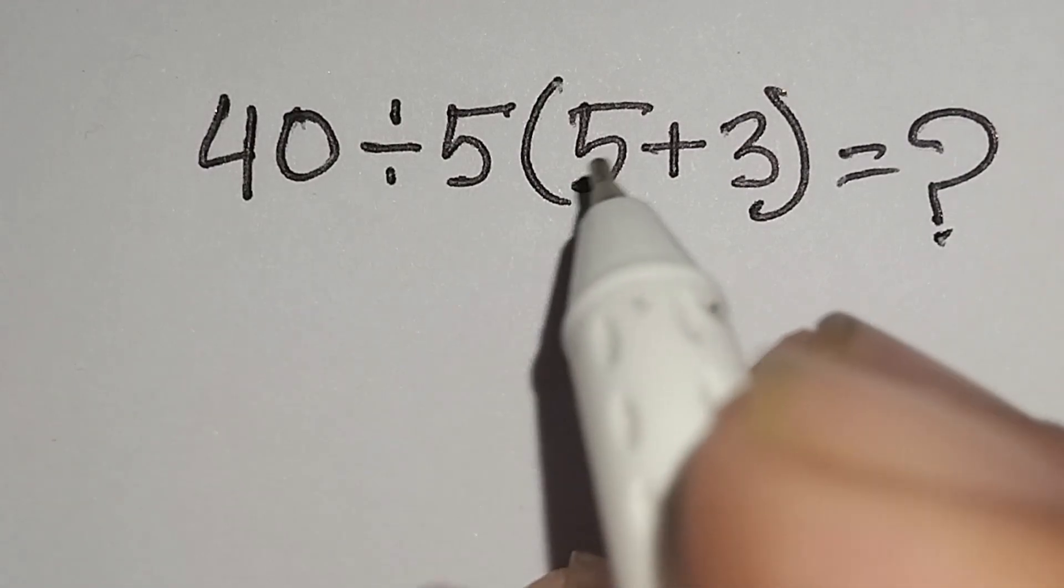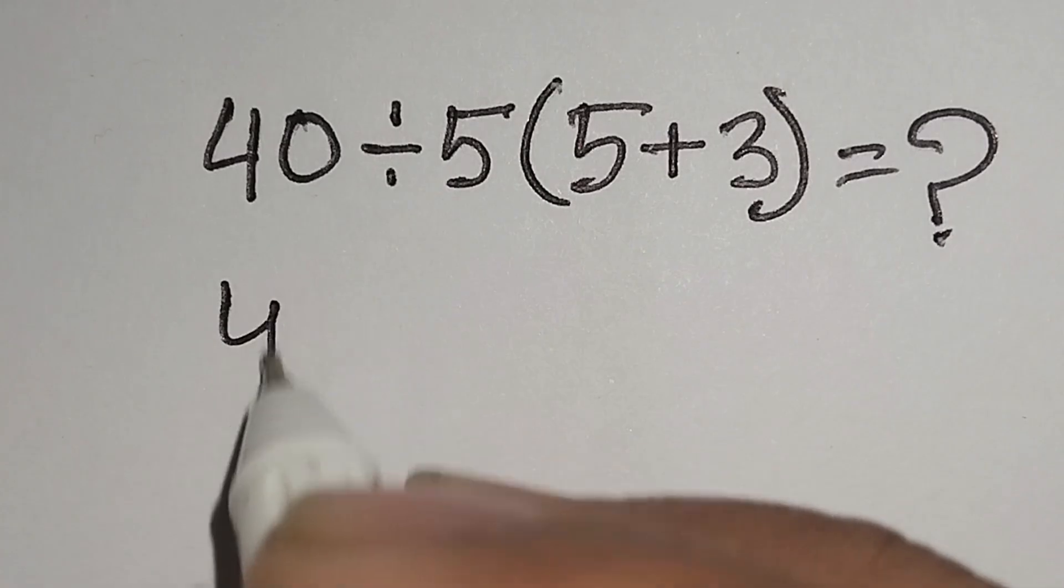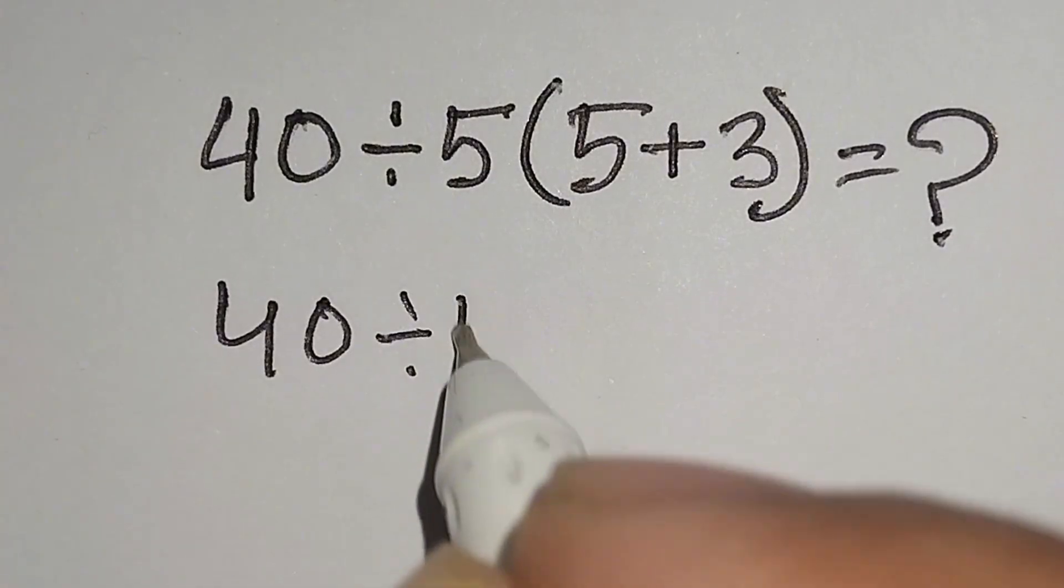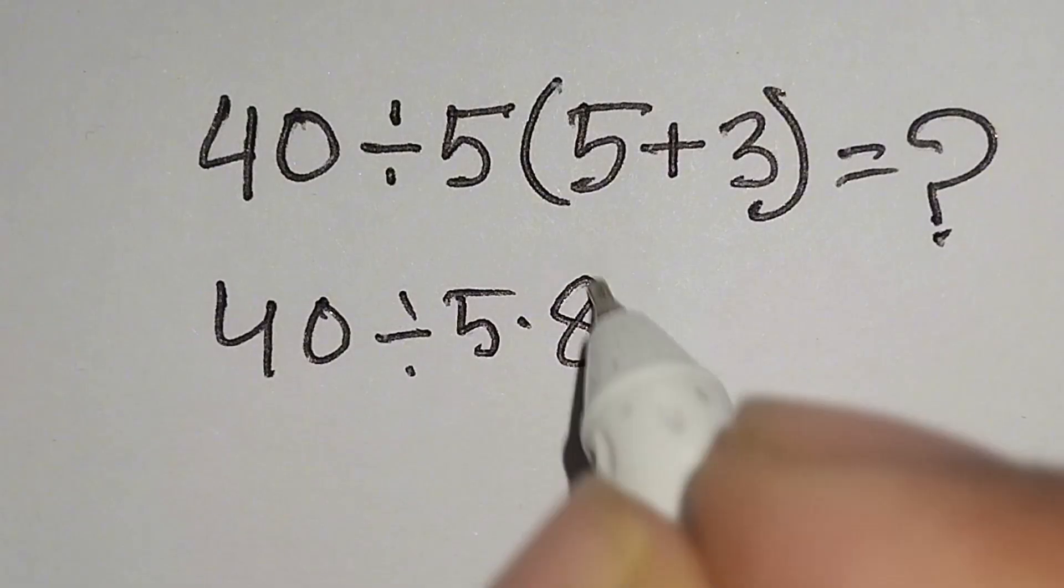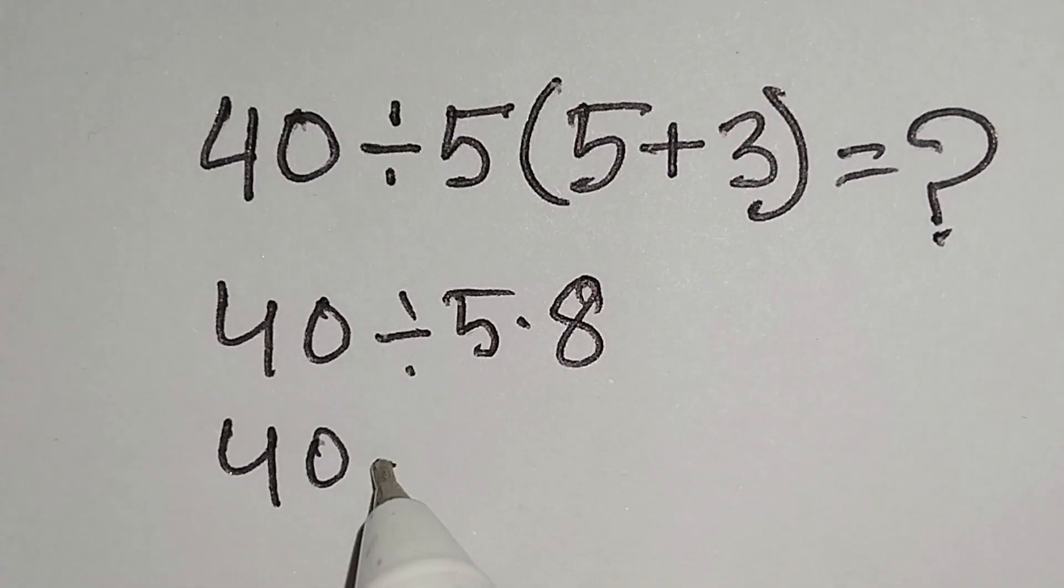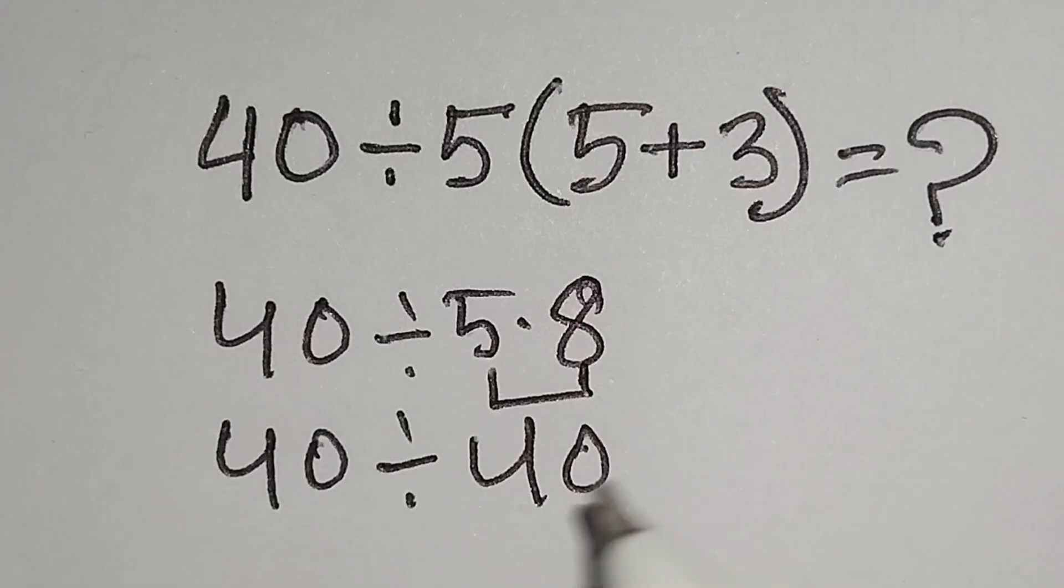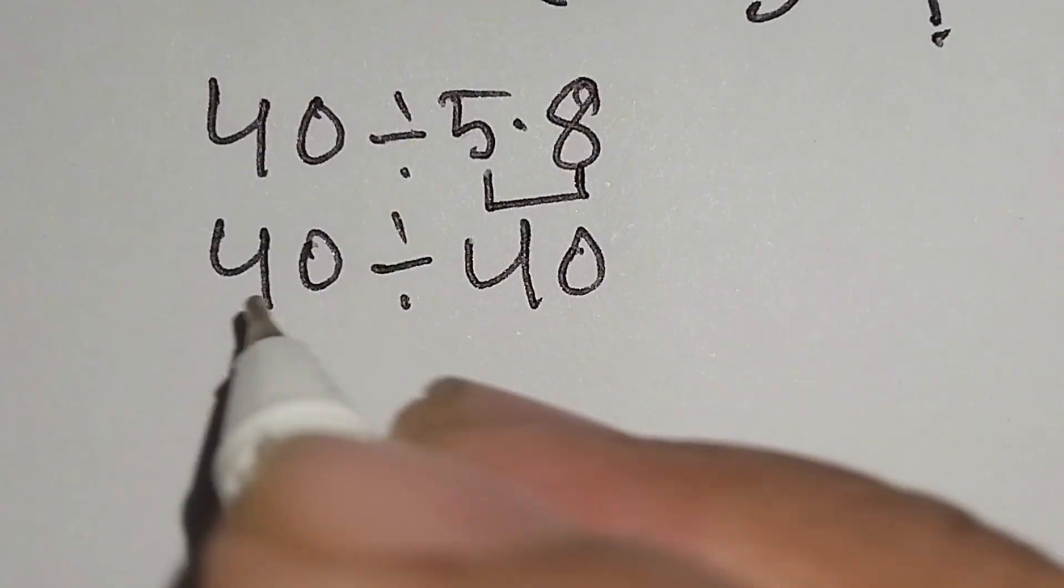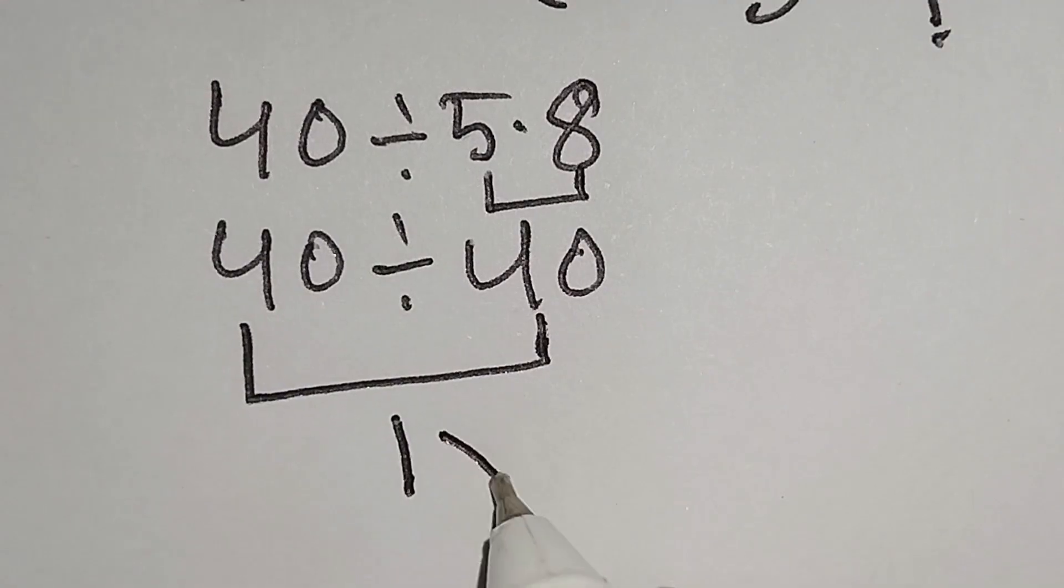40 divided by 5 bracket 5 plus 3 equals what? Here, 40 divided by 5 multiply 5 plus 3 gives us 8. Here, 40 divided by 5 times 8 gives us 40. Here, 40 divided by 40 gives us 1. But it is not correct.